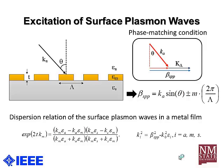Beta SPP is the wave vector of the surface plasmon wave. Once we obtain beta SPP, we can use this phase matching condition to obtain the value of the period, capital lambda. And once we excite the surface plasmon wave, we can expect highly enhanced optical transmission through this nanostructure — namely, extraordinary optical transmission (EOT).